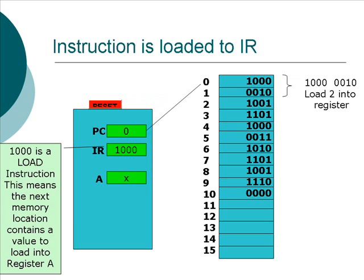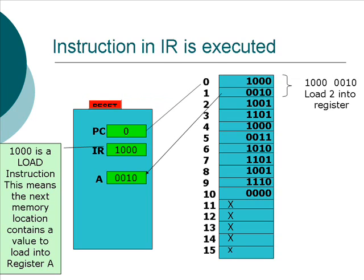The processor begins to interpret that and says: that's a LOAD instruction, which means I take the very next value in memory and put it into the A register. So the very next memory location is location number 1, and the contents of that is 0, 0, 1, 0. So that value gets loaded into register A.